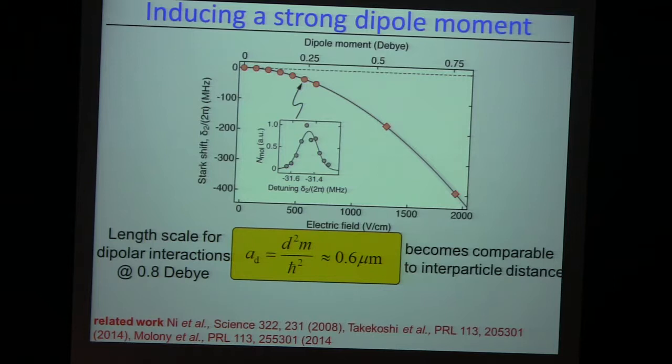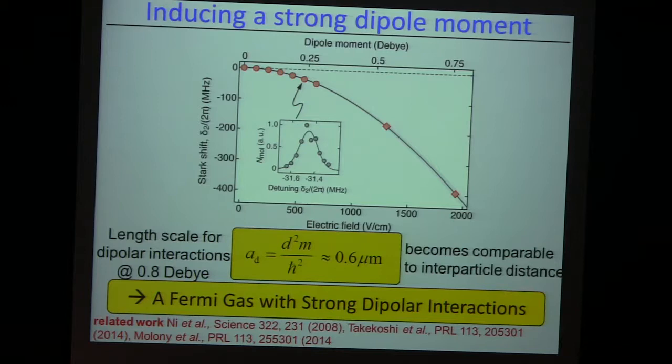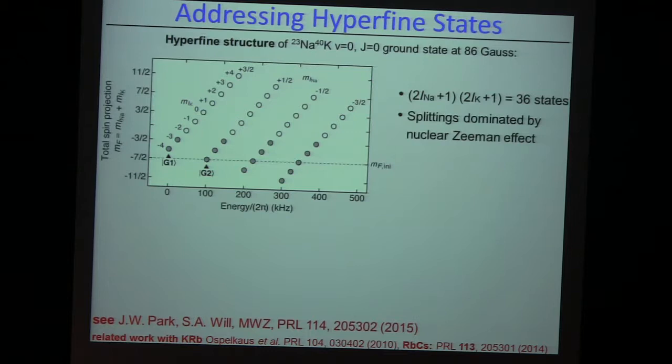That corresponds to a dipolar length of around six hundred nanometers, which is really very comparable to the typical interparticle spacing in these gases. So that would provide us with a strong coupling for the interactions.